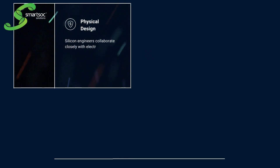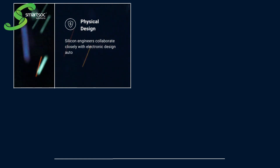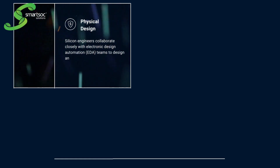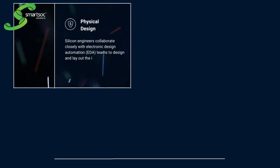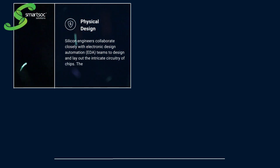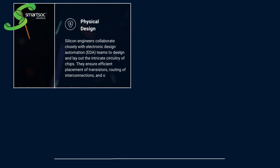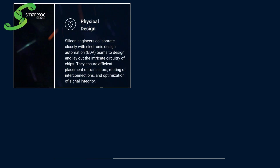Physical Design: Silicon engineers collaborate closely with Electronic Design Automation teams to design and lay out the intricate circuitry of chips. They ensure efficient placement of transistors, routing of interconnections, and optimization of signal integrity.